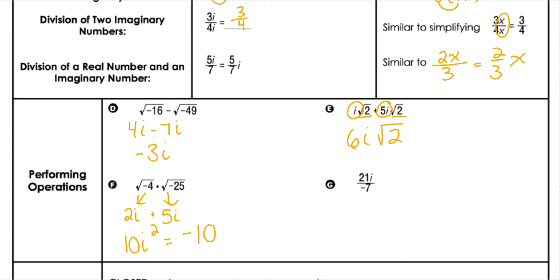And then lastly with dividing, we can do the numbers divided. So 21 divided by negative 7 is negative 3, and then we put the i on the end.